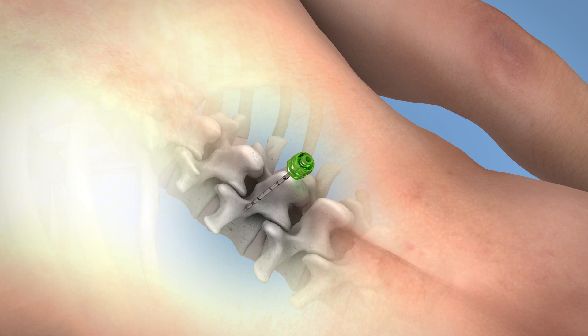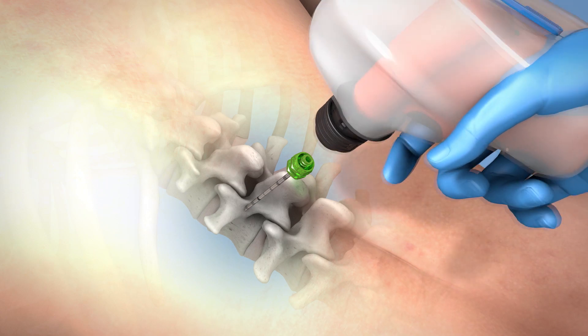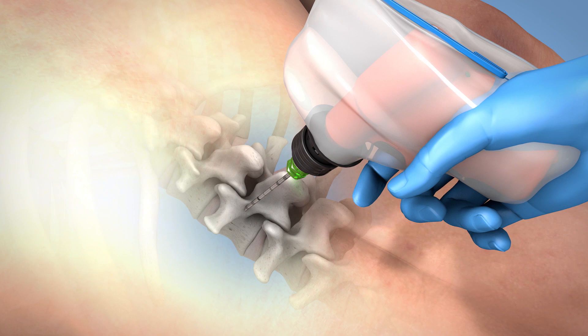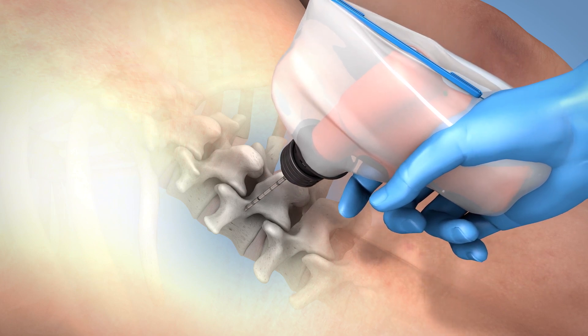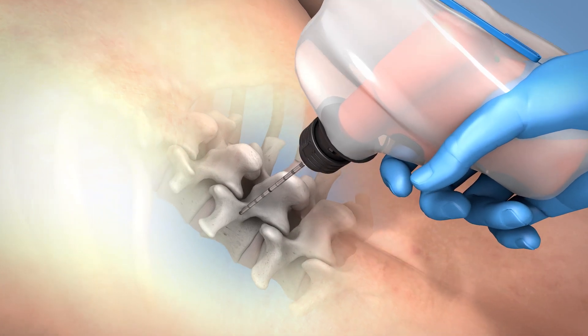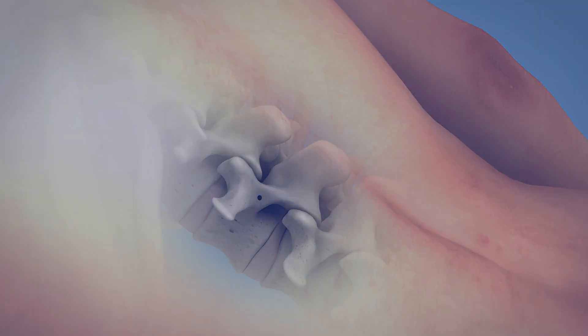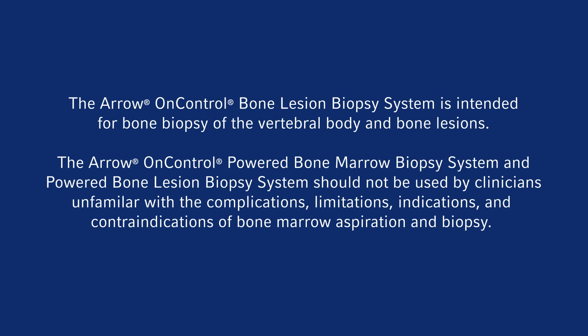To remove the bone access cannula from the patient, reattach the power driver to the hub of the bone access cannula. When correctly attached, you will hear an audible click. Squeeze trigger and gently pull straight out of patient.